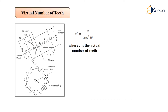This can be proved from the physical analytical condition that the radius of curvature r' at any point b is given by r' is equal to a squared upon b, where a and b are the semi-major and semi-minor axes. Substituting the values of a and b in the expression for r', we can write r' is equal to (d upon 2 cos psi) squared divided by (d by 2). Therefore, r' can be written as d upon 2 cos squared psi.